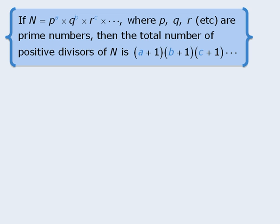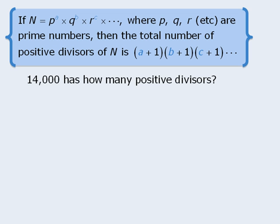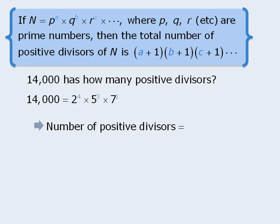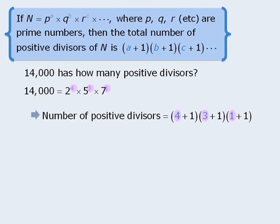Notice that this technique requires us to find the prime factorization of the target number. So now let's apply this technique to find the number of positive divisors of 14,000. So first, we will find the prime factorization of 14,000. And now, to find the total number of positive divisors, we will take all of the exponents here and increase each of them by 1 before finding their product. When we evaluate this, we get 40, so 14,000 has 40 positive divisors.